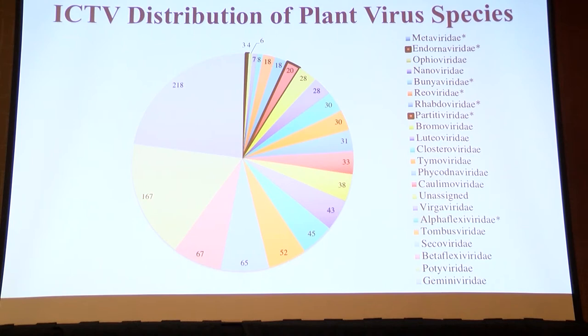This ICTV chart from 2012 shows the distribution of plant virus species into different families, and they don't recognize very many persistent plant viruses at all. This is the picture from basic plant virology done for over a hundred years, and it's not a very accurate picture in terms of what we now know.